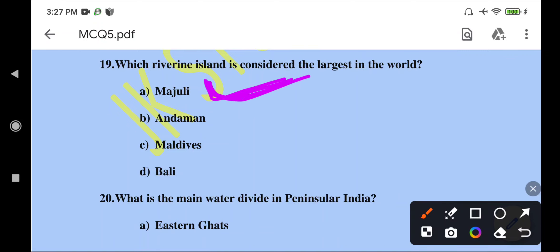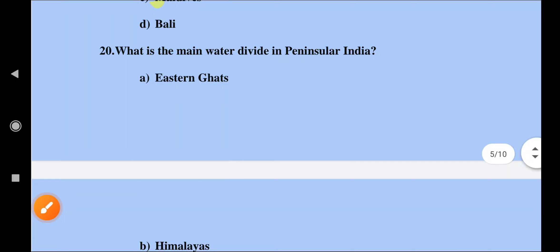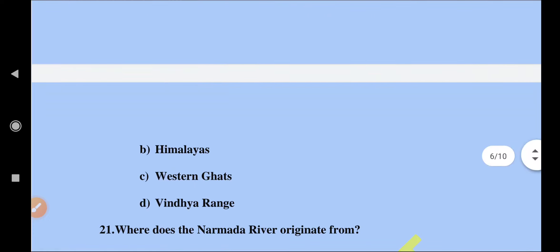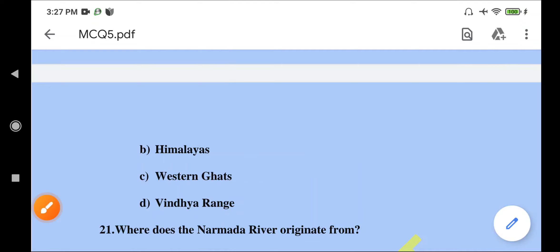Which river island is considered the largest in the world? That is Majuli, which is located in Assam. Next: what is the main water divide in Peninsular India? The options are Eastern Ghats, Himalayas, Western Ghats, or Vindhyan Range. The correct option is Western Ghats.